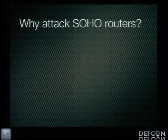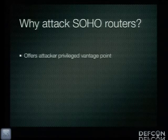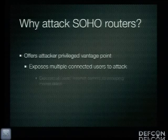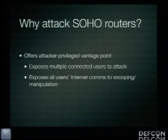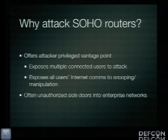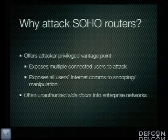So why do we attack SOHO routers to begin with — these little inexpensive consumer-grade devices? A successful compromise of a SOHO router gives the attacker a really privileged vantage point on a user's network. It exposes potentially multiple connected users to further attack, and it also exposes multiple users' internet-bound communications to interception and even possible manipulation. It's certainly not unheard of for people to plug these devices into their work networks, so a successful compromise can serve as a side door into an otherwise well-defended network.